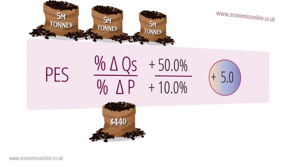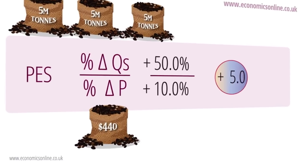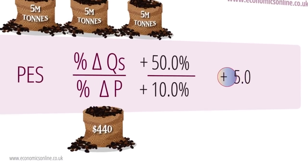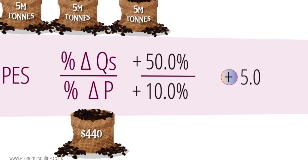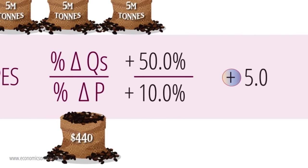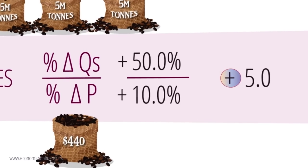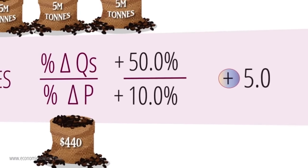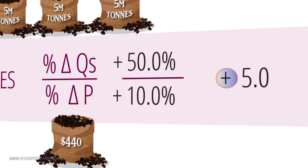This is a positive value. As the price of a commodity rises, producers are encouraged by the expectation of higher profits, which creates an incentive to supply more. Hence the sign for PES will be positive.